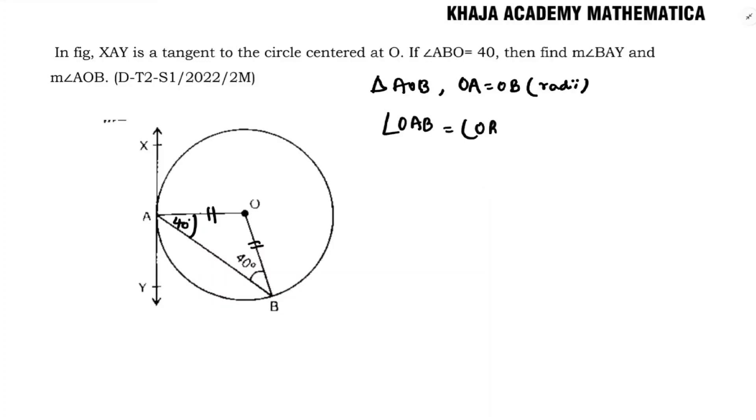Now I'll use the angle sum property of this triangle. Angle OAB plus angle OBA plus angle AOB equals 180 degrees.